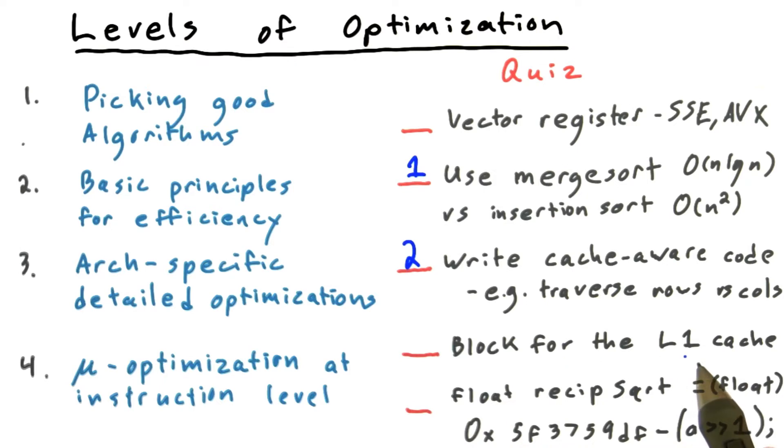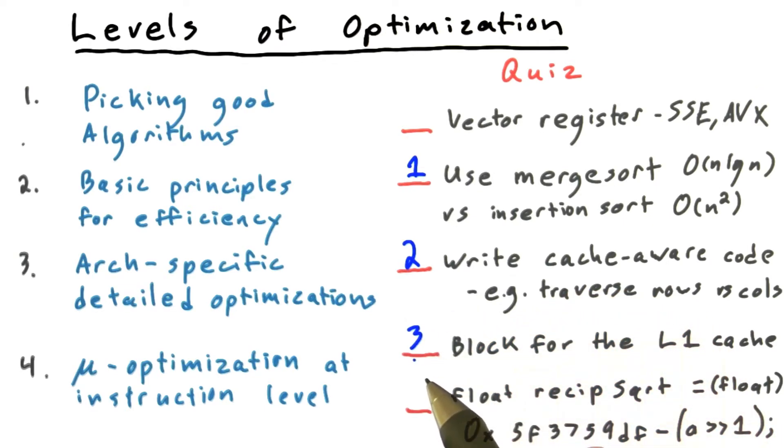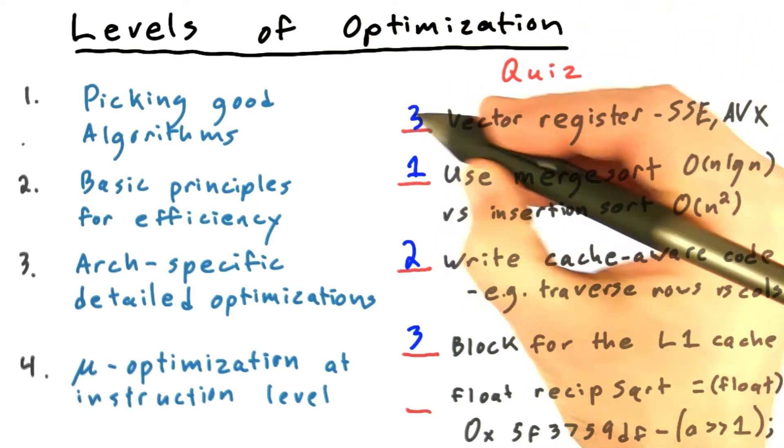On the other hand, blocking for the L1 cache—which means carefully sizing your working set to fit exactly in the per-core cache on the CPU—this is a detailed optimization. It's going to depend on the exact CPU model you're using because every CPU core has a different size L1 cache. I would also put the use of vector registers like SSE or AVX intrinsics into this category.